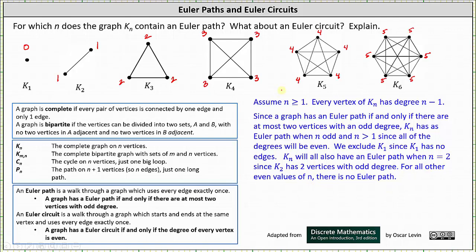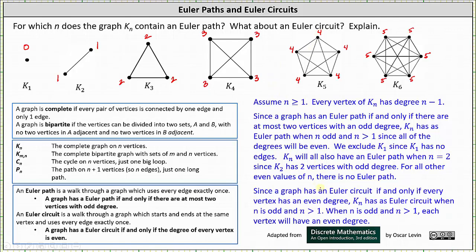Now consider the values of n for which K sub n has an Euler circuit. Since a graph has an Euler circuit if and only if every vertex has an even degree, K sub n has an Euler circuit when n is odd and n is greater than one. When n is odd and n is greater than one, every vertex will have an even degree and therefore the graph will have an Euler circuit. Again, notice we are excluding K sub one since K sub one has no edges.